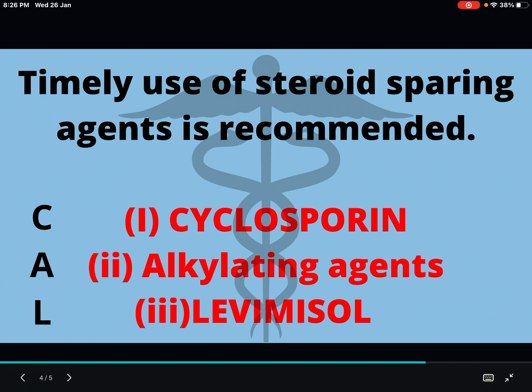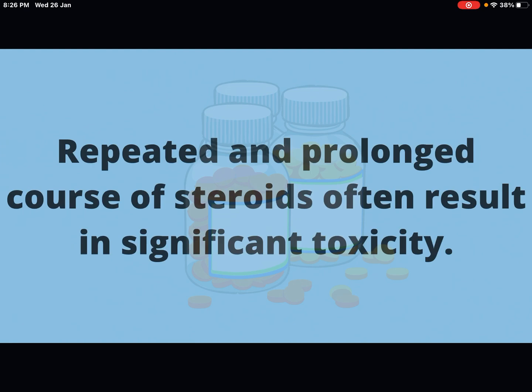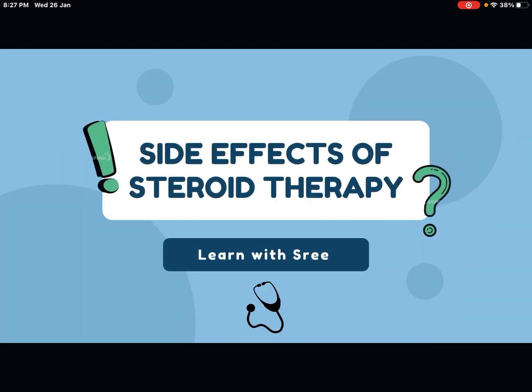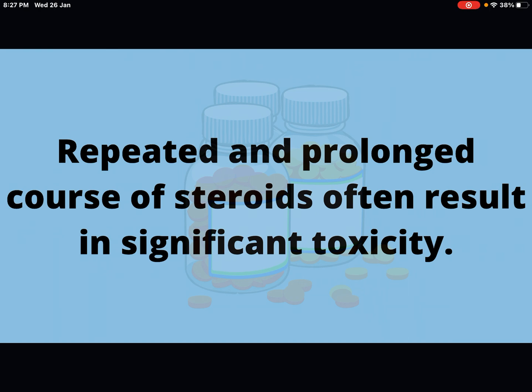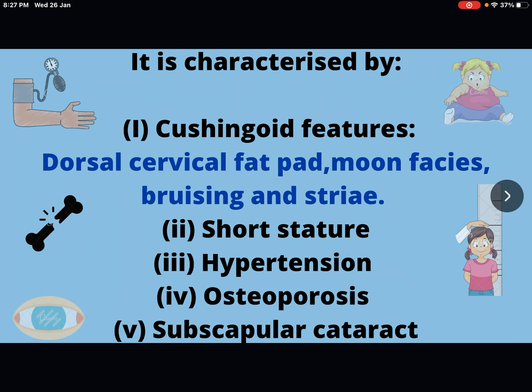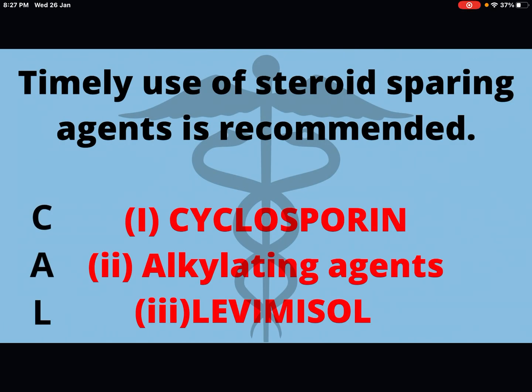I have taken this content from OP Ghai, and only one small paragraph is given for the side effects of steroid therapy. You can go through that book and revise it again. I have quickly covered what you need to write for university exams — this will mostly be asked as a two-marker. The key points are the side effects, the Cushingoid characteristics, and the steroid sparing agents: cyclosporine, alkylating agents, and levamisole, remembered by the mnemonic CAL.